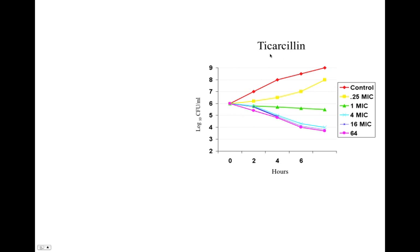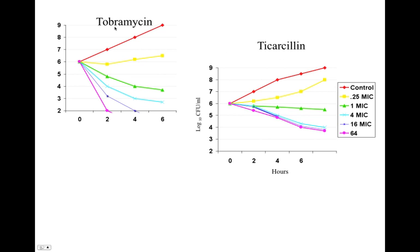Beta-lactams in general are time-dependent killers. Let's compare this to tobramycin, which is an aminoglycoside. Here's our control, 0.25 times the MIC, 1, 4, 16 — and you can see with each increase we get a significant increase in the kill. This is a concentration-dependent killer. If we can get to 64 times the MIC, we've got this bug eradicated in 2 hours. This is like a punch — it's kaboom, and it's gone, if you can get the concentrations nice and high.